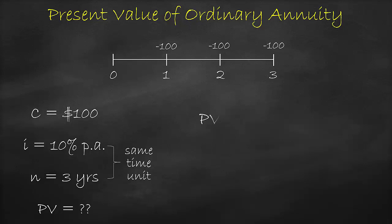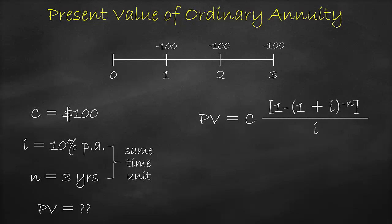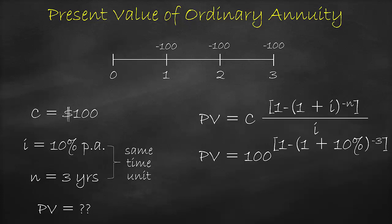The present value formula is: cash flow multiplied by [1 minus (1 plus the interest rate) to the power of negative number of periods], all divided by the interest rate. Therefore, our present value today at time zero is: 100 multiplied by [1 minus (1 plus 10%) to the power of negative 3], all divided by 10%, which is equal to $248.69.